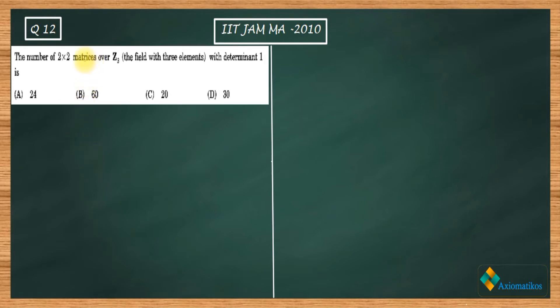The number of 2×2 matrices over Z₃, the field with three elements, with determinant one. These are your four options. It's directly a formula-based question. I will show you that formula and we are done.